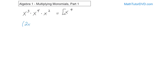What if you have 2x squared and you're multiplying it by 5x squared? Now it's different because you have numbers in front. When you have numbers in front and you're multiplying them, you can always multiply the numbers together — so 2 times 5 is 10 — and then look at the exponents. The bases are the same, so you add the exponents together. It's 10 times x to the fourth power. That is the final answer.